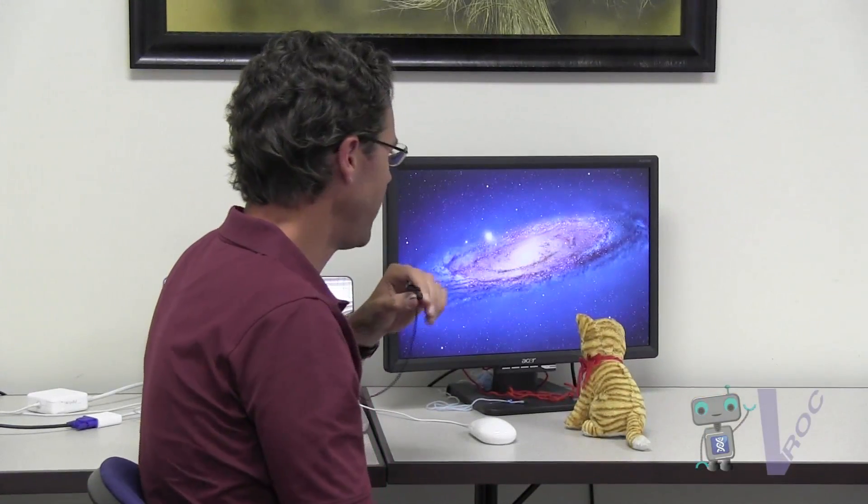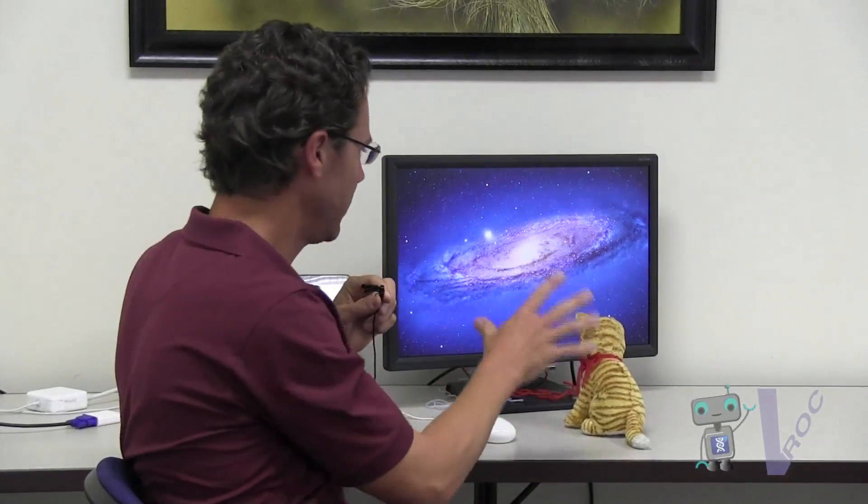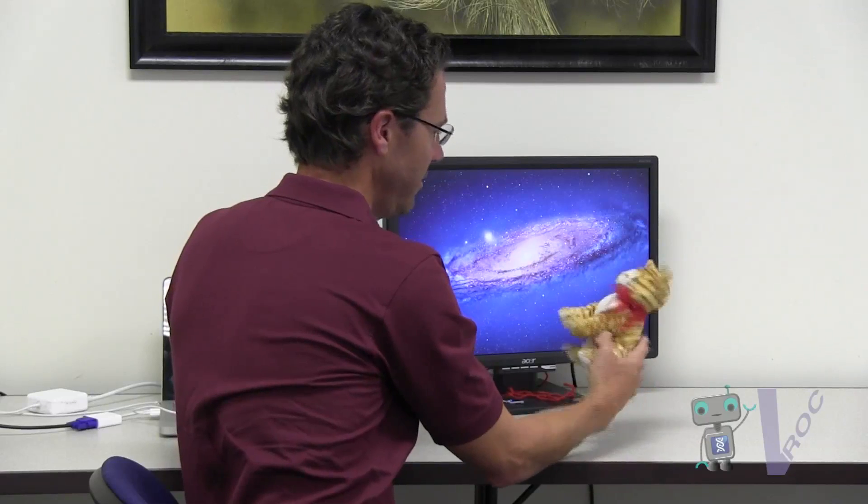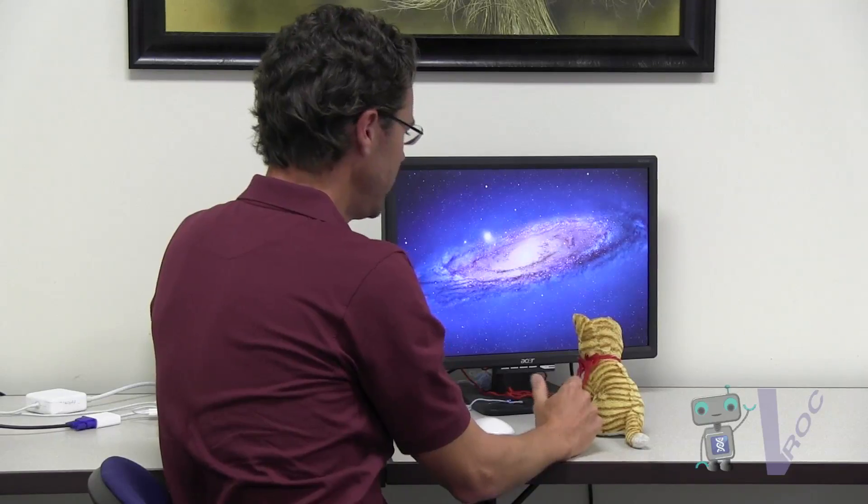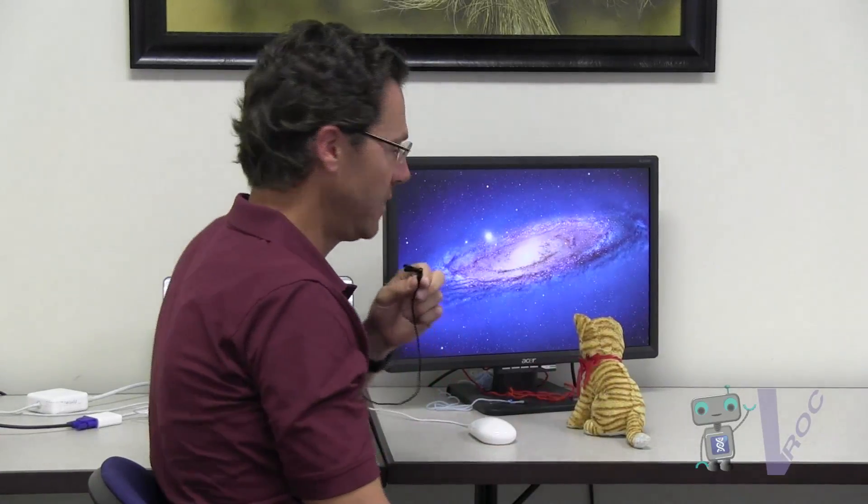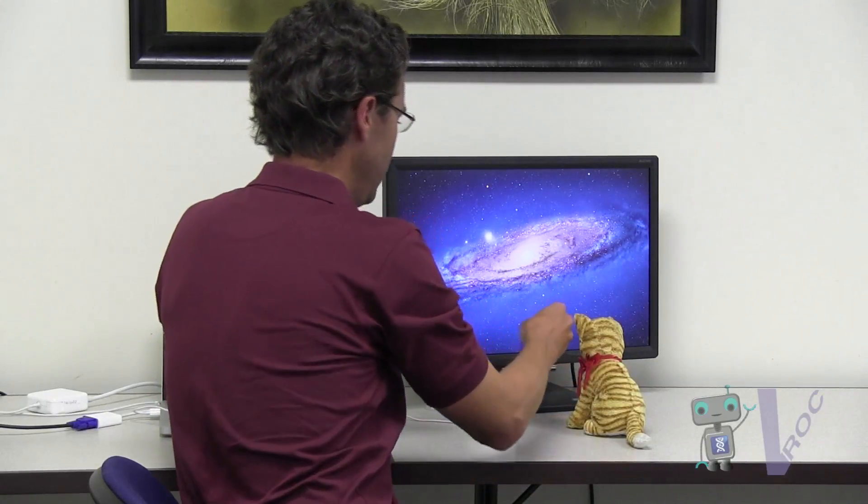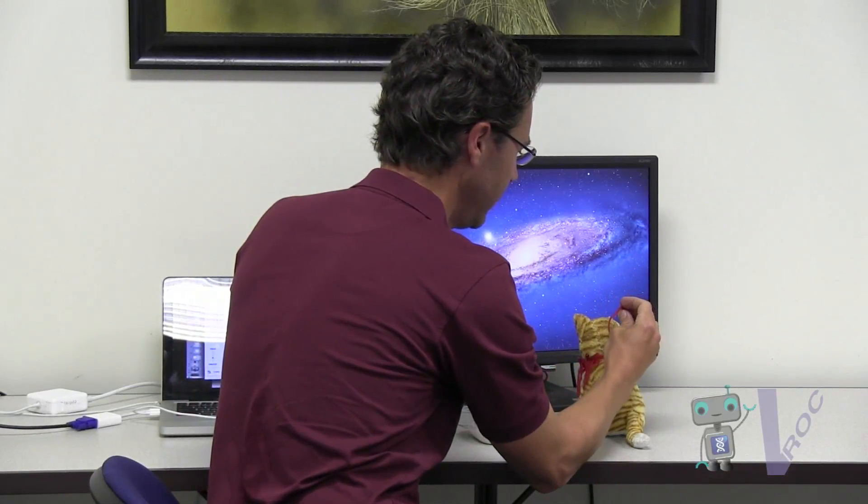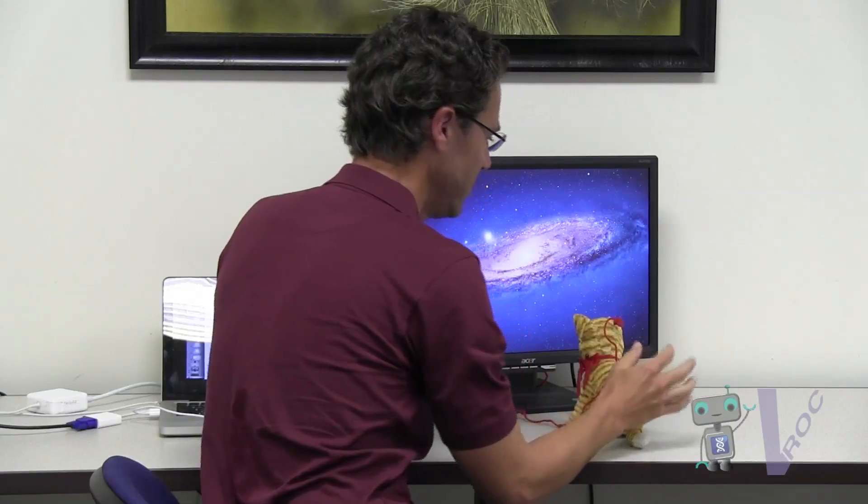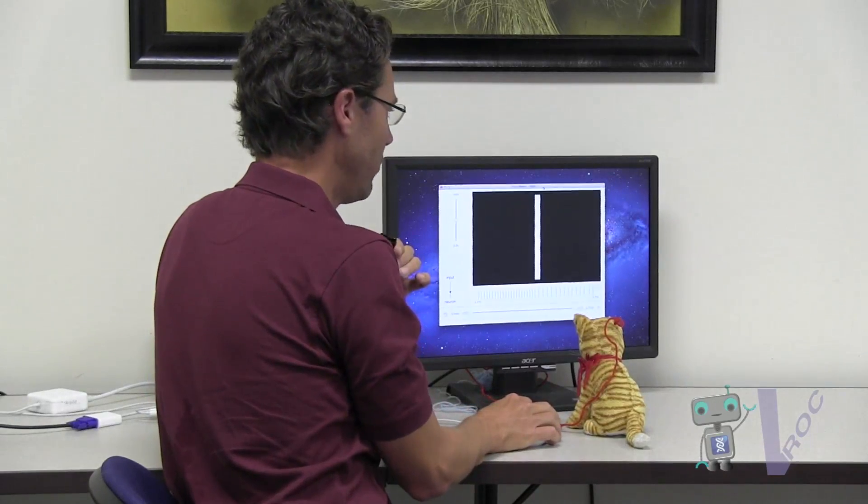Some of the first experiments that were done to understand how the brain processes information went something like this. Here I've got a little cat—it's not a real cat. The first experiments were done on real cats, of course. They wanted to understand the visual system and how it processes and represents information. We're going to pretend that this is an electrical probe, and we're going to surgically implant it into the cat's visual system, into a single neuron. So now when information comes in, when the cat sees it, that neuron will respond.